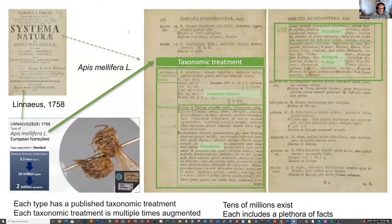I would like to talk about getting data out of taxonomic publications. All our scholarly knowledge is in taxonomic publications. According to the Biodiversity Heritage Library, this includes something like 500 million pages — the result of taxonomists and biodiversity scientists who want to communicate their findings.